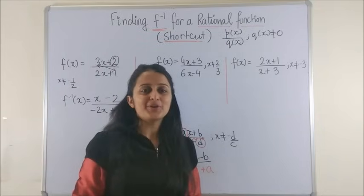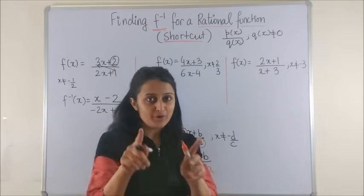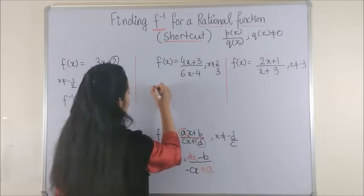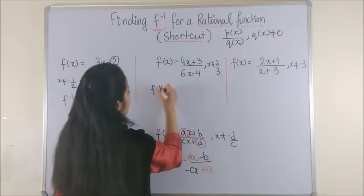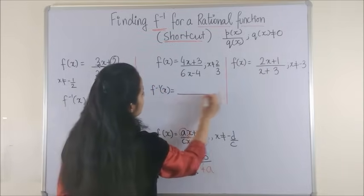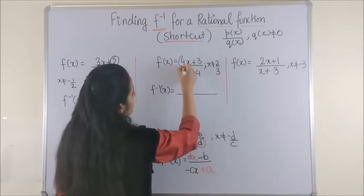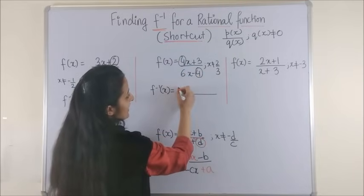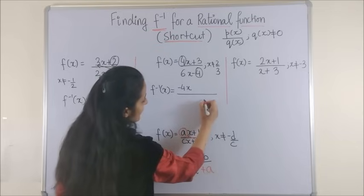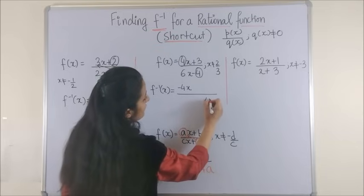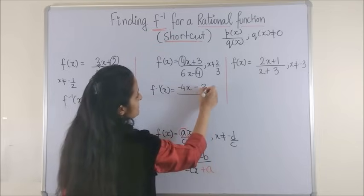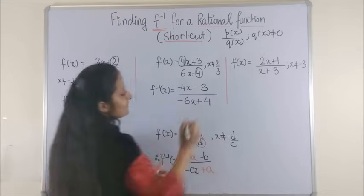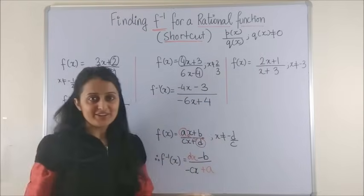Want to try question 2 on your own? Pause the video and then come back. So f inverse of x in this case: we exchange the two values along with their signs, so this is minus 4x and this is 4. This one becomes minus 3 and this one becomes minus 6. That's your answer.